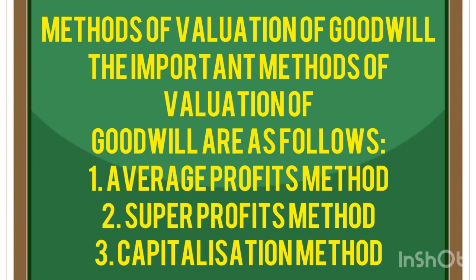Goodwill is the value of the reputation of a firm in respect of profit in future over and above the normal profit — the present value of a firm's anticipated excess earnings, the capitalized value attached to the differential profit capacity of a business. In this video, we are going to look at the Average Profit Method, Super Profit Method, and Capitalization Method.